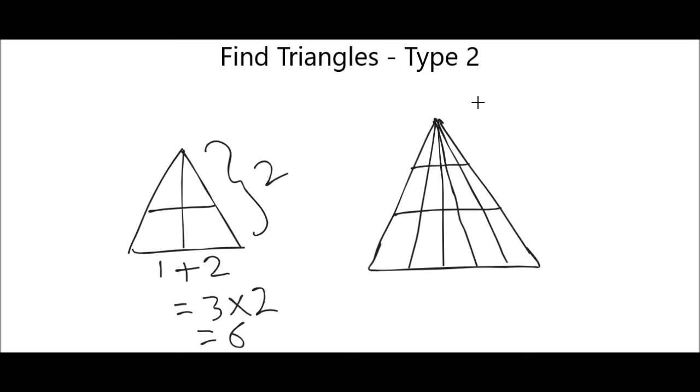For this second triangle, now we'll do how many partitions: one, two, three, four, five. So total five horizontal partitions. And now we'll see how many vertical partitions are there.